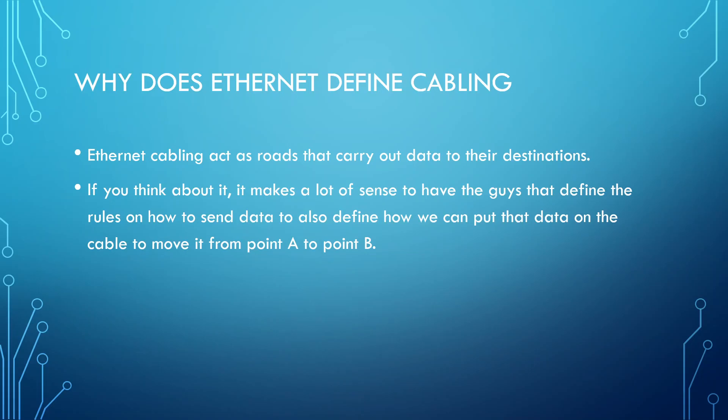So why does Ethernet define cabling? Ethernet cabling essentially acts as the roads that carry data to their destinations. And if you think about it, it makes a lot of sense for the people who are defining how we are going to use the roads to send data to actually build those roads as well. That's what Ethernet does — not only does it define how it's going to send the data and put it onto the wire, it also defines the cabling standards and how we actually use the cable to send the ones and zeros from point A to point B.